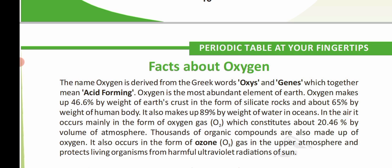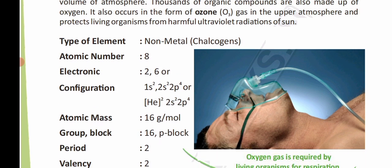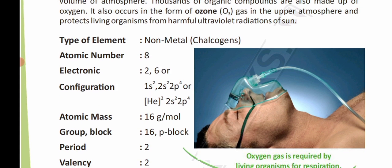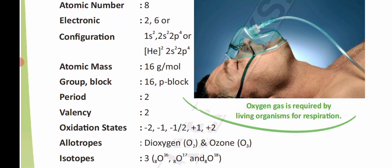Oxygen is a non-metal with atomic number eight. Its electronic configuration is 1s2 2s2 2p4, and its atomic mass is 16 grams per mole. It belongs to group sixteen and period two. It has a valency of two, and its oxidation states are minus two, minus one, minus one-half, plus one, and plus two.